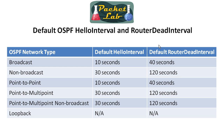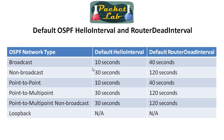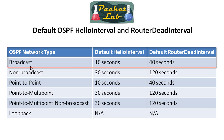You might notice a mathematical relationship between the default hello interval and the default router dead interval: the dead interval is four times the hello interval. So you really only have to memorize the hello interval column — if you know broadcast has a default hello interval of 10 seconds, multiply by four to get the default router dead interval of 40 seconds.